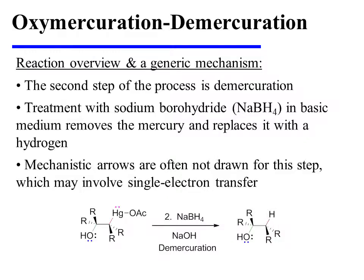The second step of the process is known as demercuration. It entails treatment with sodium borohydride in basic media, and the end result is the replacement of the mercury with a hydrogen atom. Mechanistic arrows are typically not drawn for this step, which may involve single electron transfer.